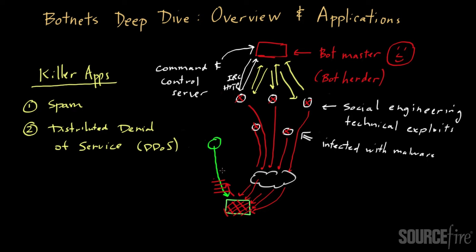The reasons attackers mount DDoS attacks are many. One reason could be notoriety - you just want to be a nuisance, take down a popular site you don't like. It turns out you can also do denial of service for extortion of money and blackmail. Let me explain how that model works.